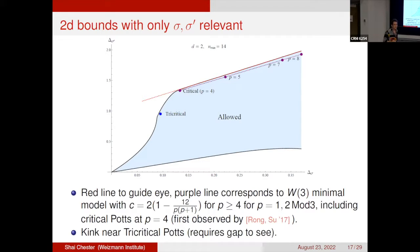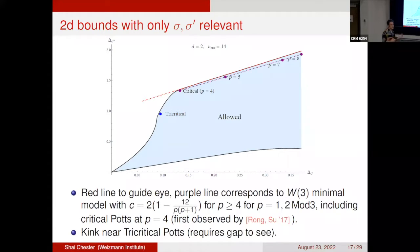Regarding assumptions for this plot: we assume σ and σ' are the only two relevant charged operators, but make no assumptions about singlets — the number of singlets is completely general. This is why the plot, while showing kinks near critical and tricritical theories, has room for improvement. In subsequent plots, additional assumptions will be imposed.